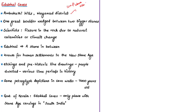Scientists do not agree to the naming as 'cave' because normally a cave means a large hole in the side of a hill or mountain or a hole leading underground. Scientists say the appearance is because of a fissure in the rocks caused by natural calamities and climate change. The name Edakal means 'a stone in between.' These caves are known for human settlements in the New Stone Age or Neolithic Age, that is between 8000 BC and 4000 BC.